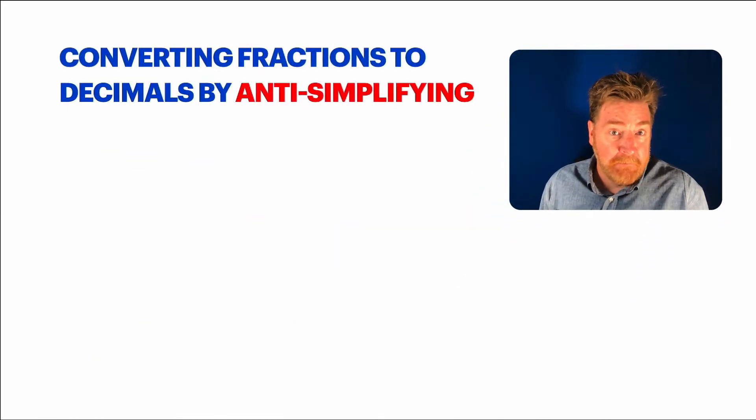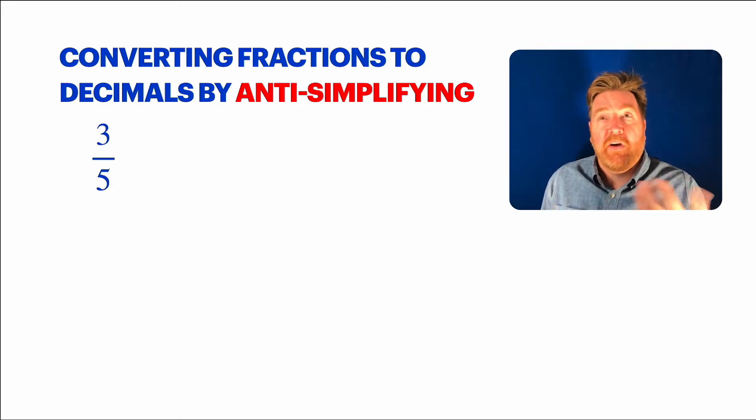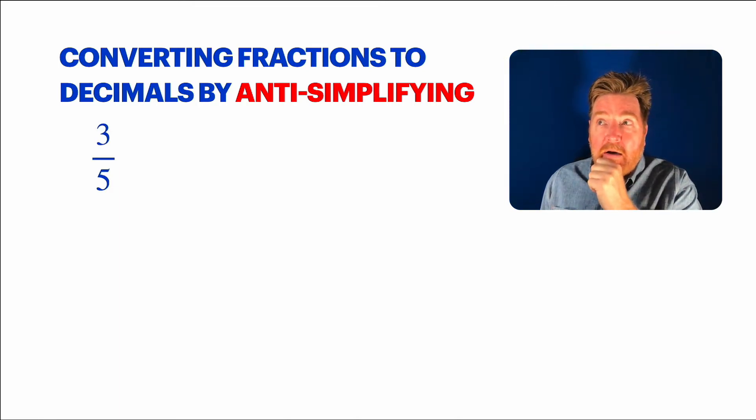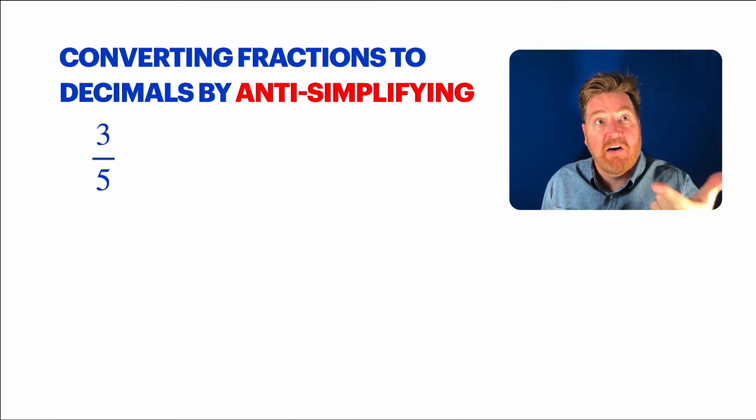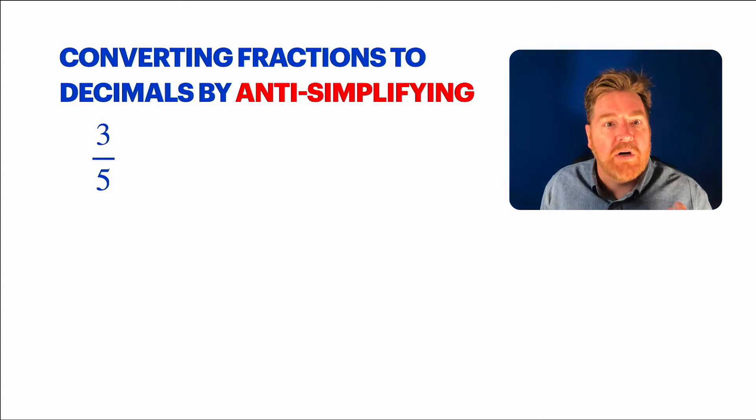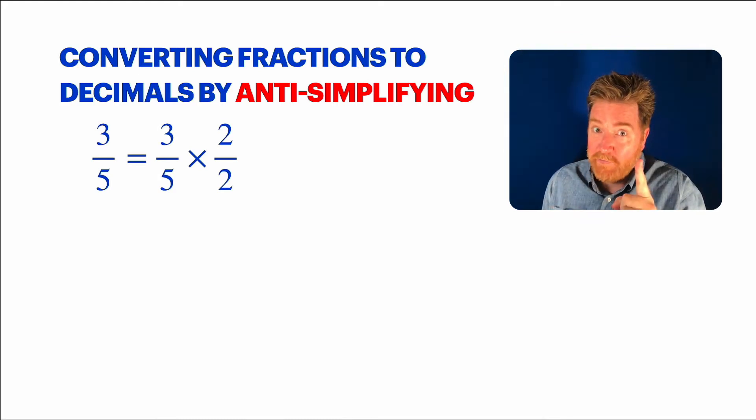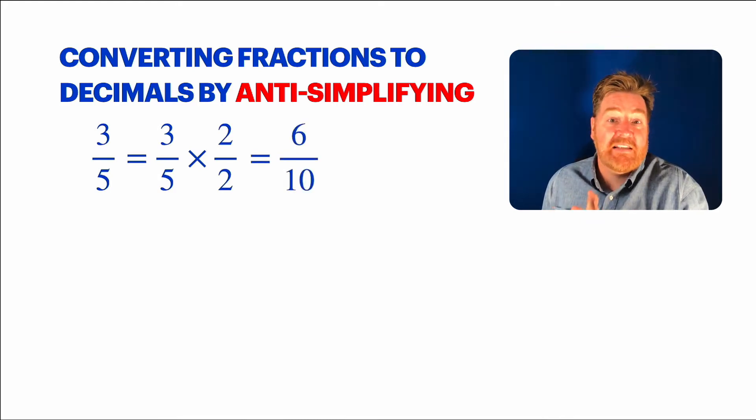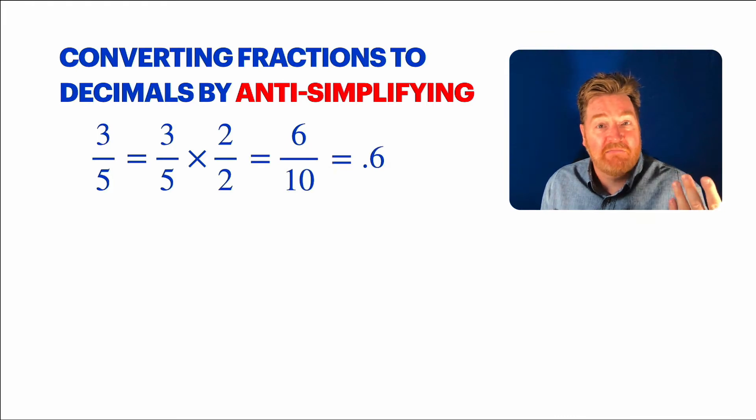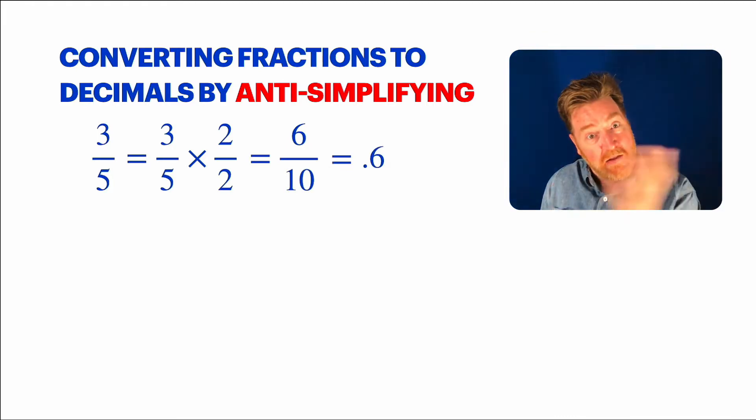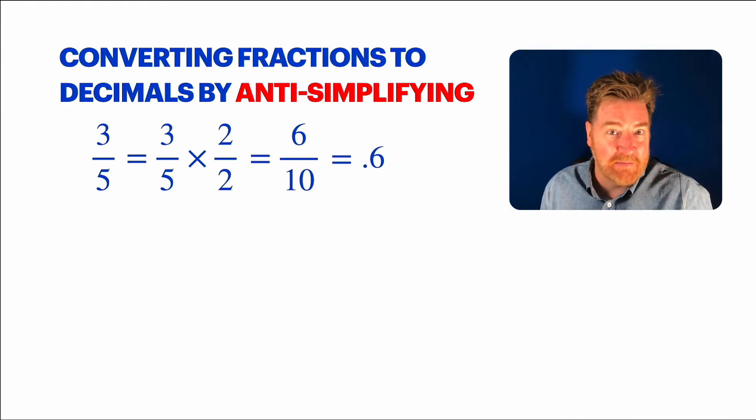As a matter of fact, a lot of fractions we can simply convert into decimal form just by anti-simplifying. Let's look at that a little bit more closely. Let's say you had a number like 3/5. Can I convert or anti-simplify 3/5 into a fraction in the tenths family, like tenths, hundredths, thousandths? And the answer is of course. I can turn fifths into tenths very simply. I multiply it by 2/2, one, the form of one. So that's 6/10 or 0.6.